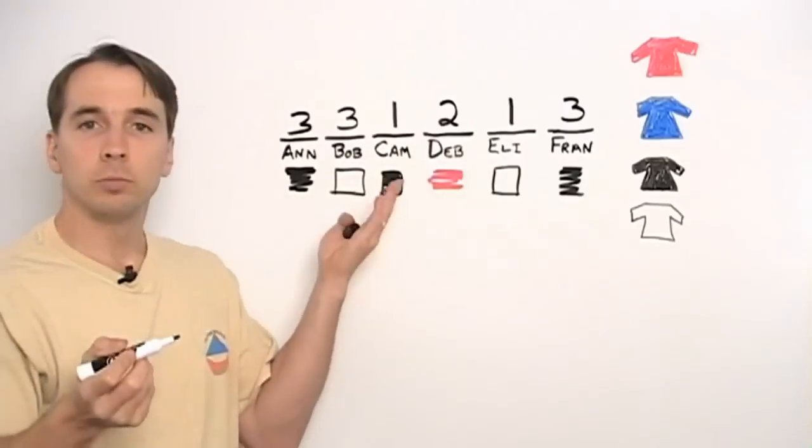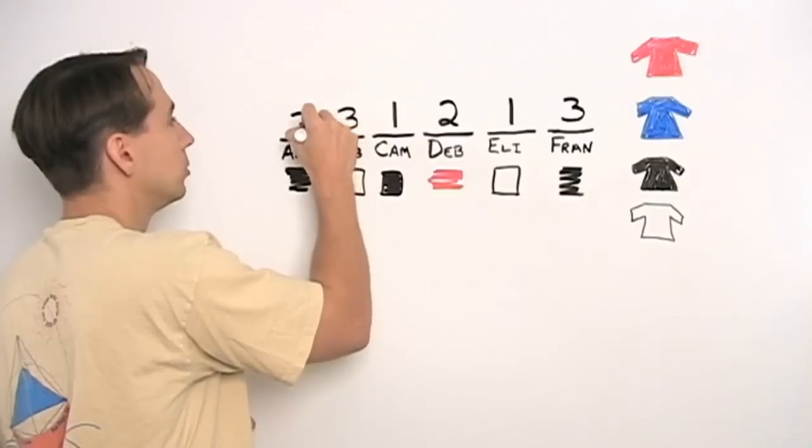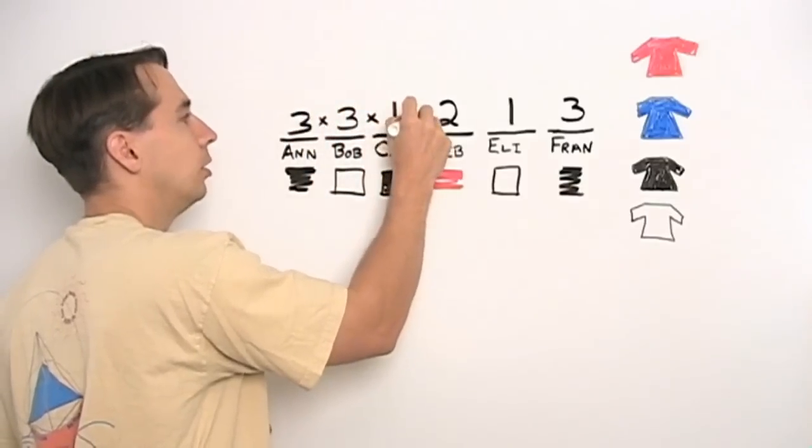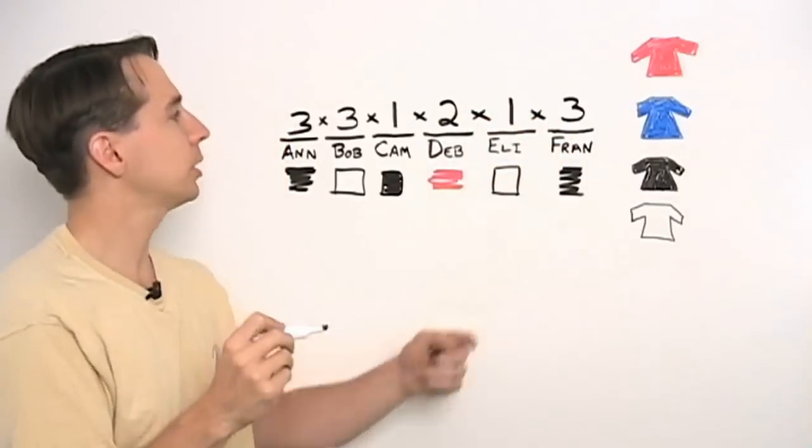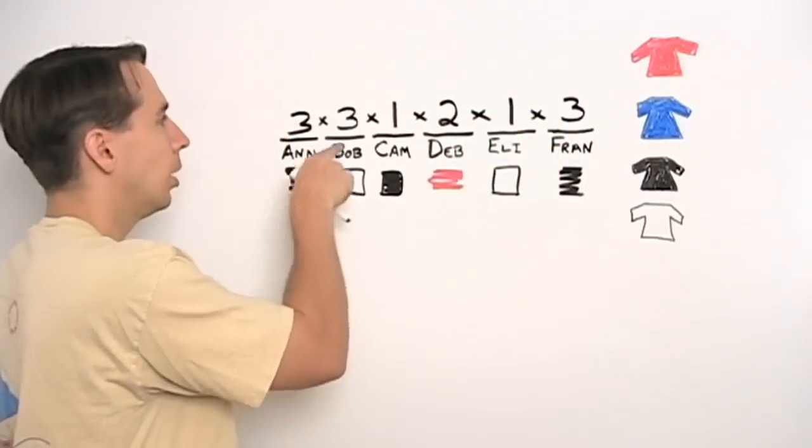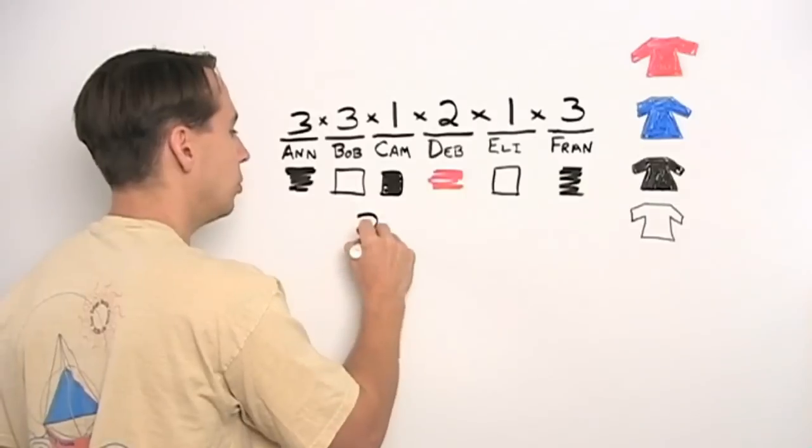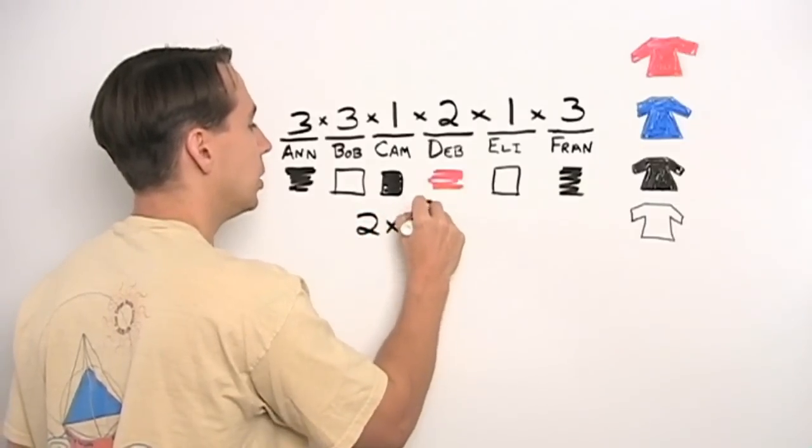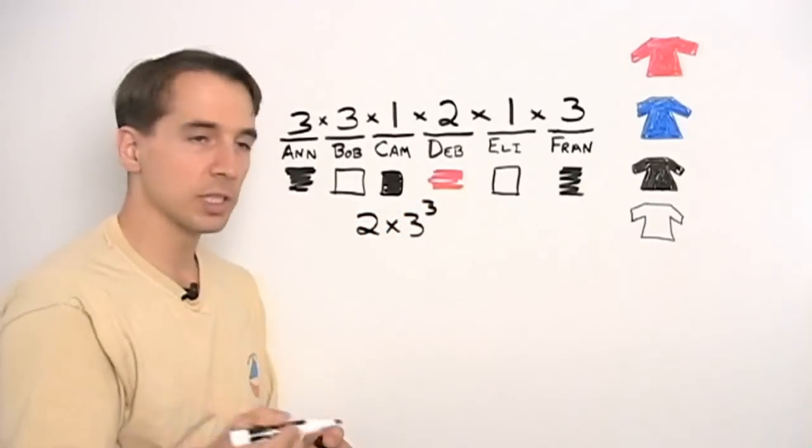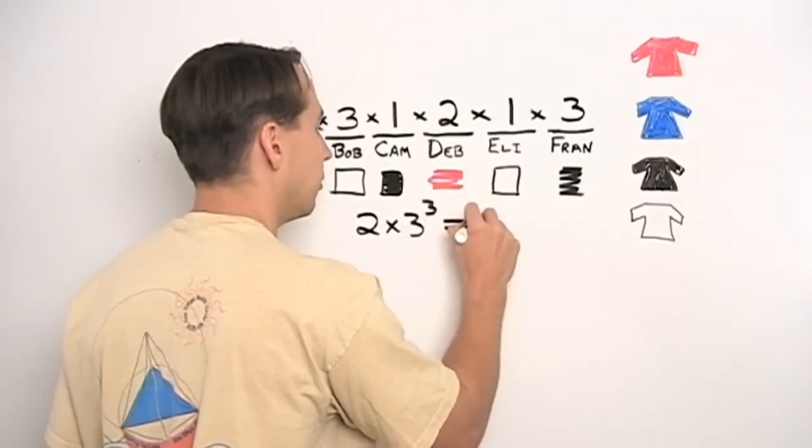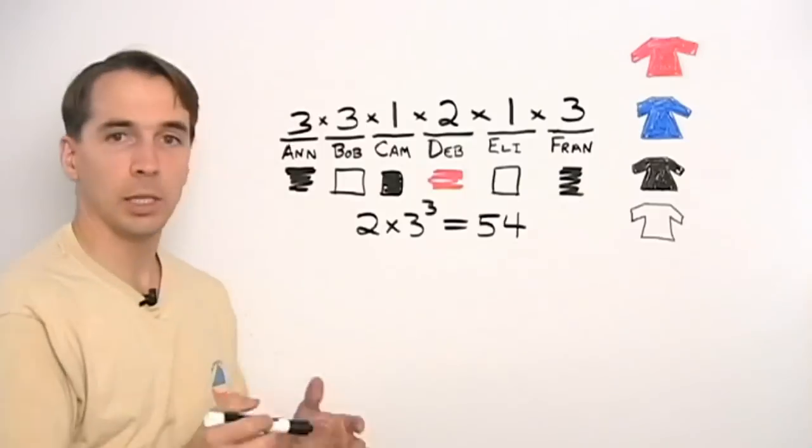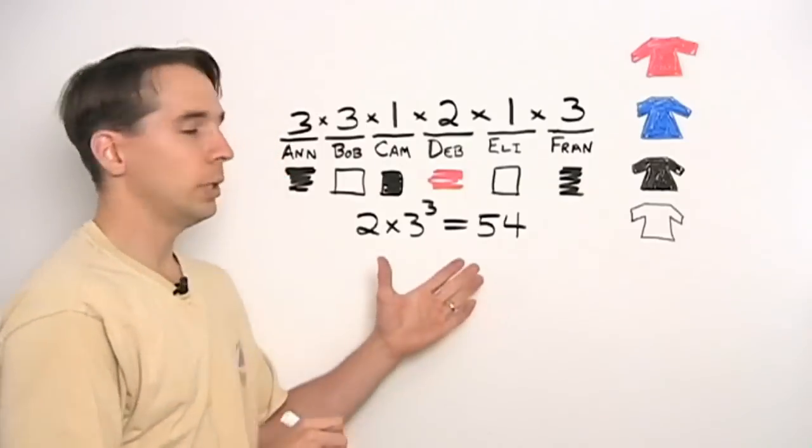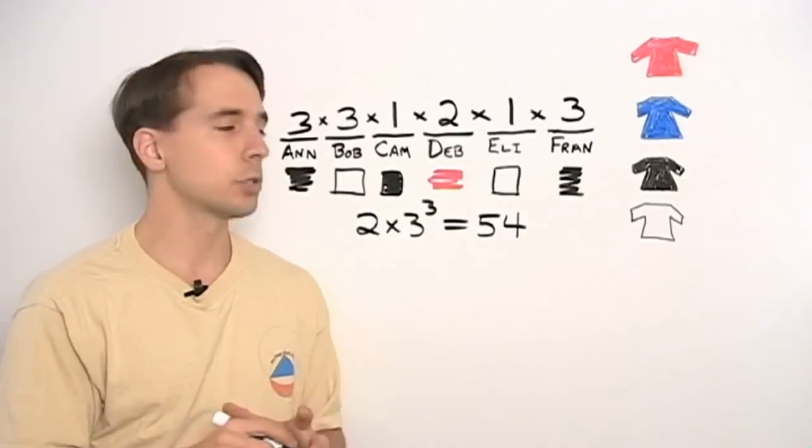So now, once again, we can count. And all we've done is another case of what I called constructive counting. I thought about how they would pick their shirts. And we have 2×3^3 possibilities. 3^3 is 27. 2×27 is 54. So we see that just because Cam and Eli insist on being difficult, we now have way fewer choices.